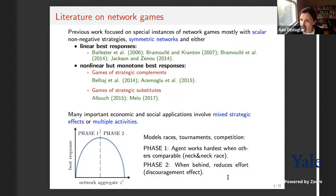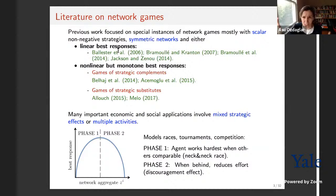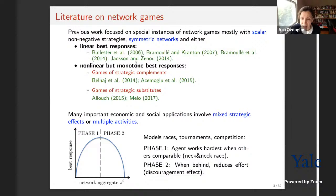If you look at the literature on network games, for tractability reasons, special instances were considered mostly with scalar non-negative strategies, symmetric networks, and structural assumptions — either linear quadratic games, which yield linear best responses enabling analysis as a linear system of equations, or potential game approaches. More recently, people have also been looking at non-linear best responses assuming monotone-type assumptions — either strategic complements or substitutes.